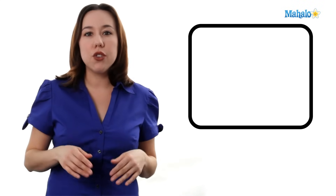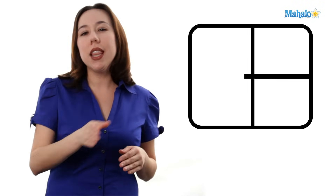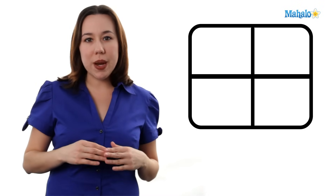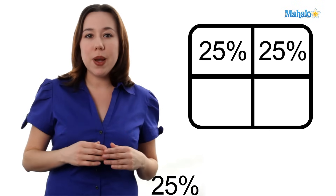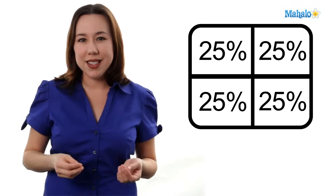In that square, you're going to draw a line right down the middle from the top to the bottom, and a line from left to right. Now you have four individual squares. Each of those squares is going to be a probability, and each of those squares is one fourth, or 25%.